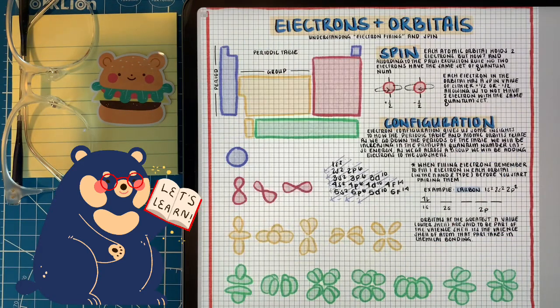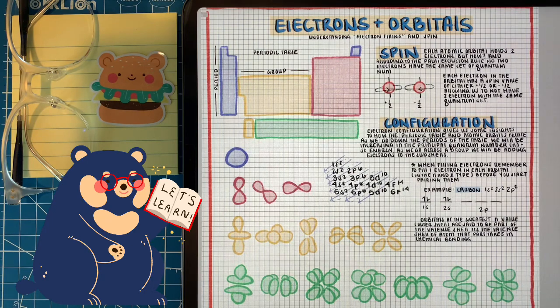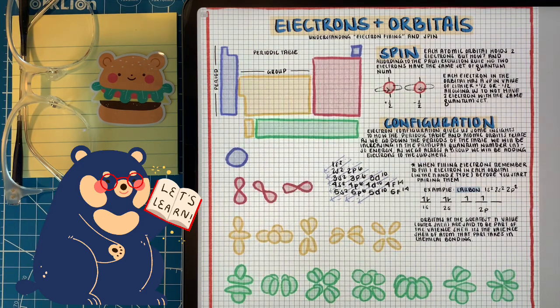Before we can talk more about chemical bonding, we have to talk about how electrons behave in atomic orbitals. First of all, there are two electrons per atomic orbital. Now, this might be hard to understand since now two electrons have the same quantum number set. This is because of spin. Each electron will have a different spin value that is usually represented by ms. One will have a positive one-half, and then the other will have a negative one-half.